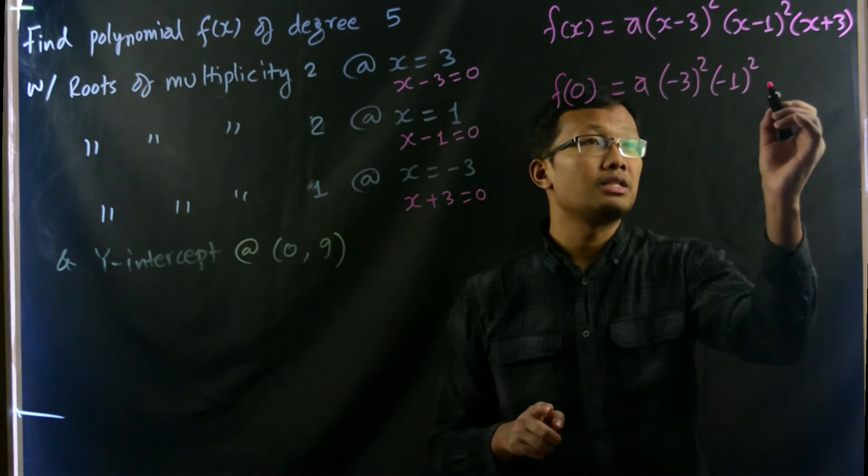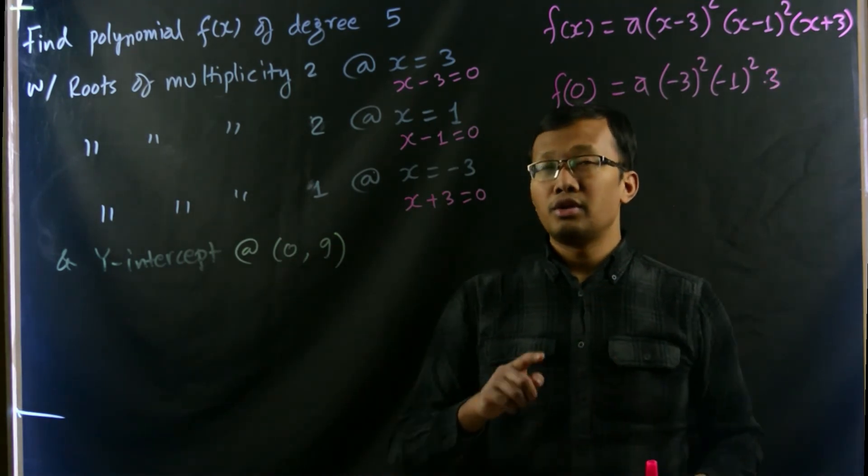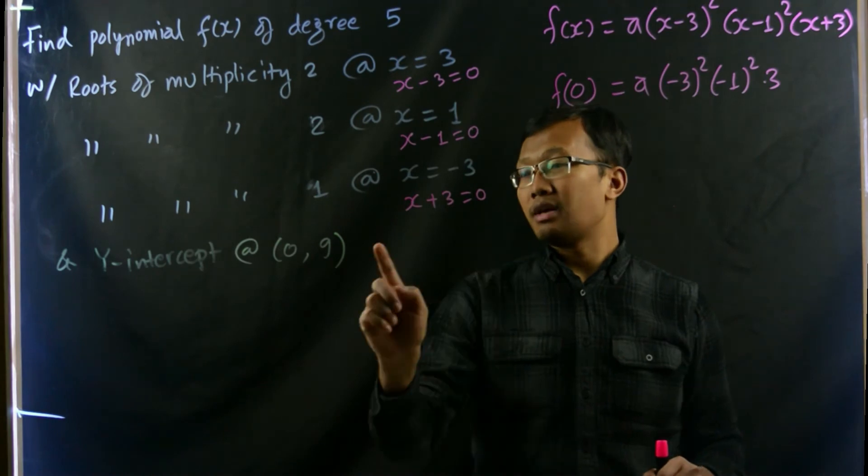And x plus 3 means 0 plus 3 which is simply 3. And we know that its functional value at 0 is 9.